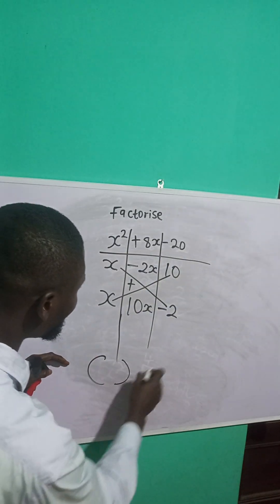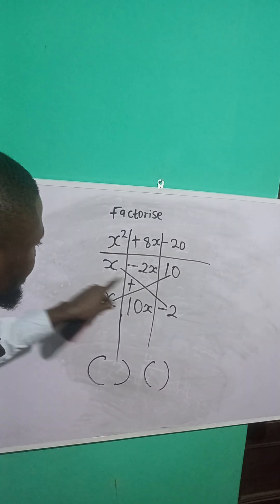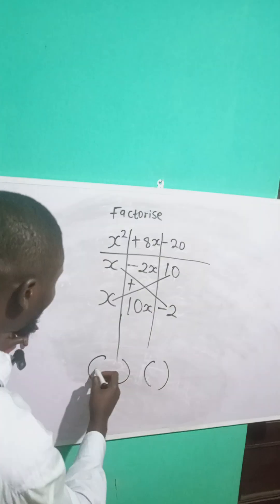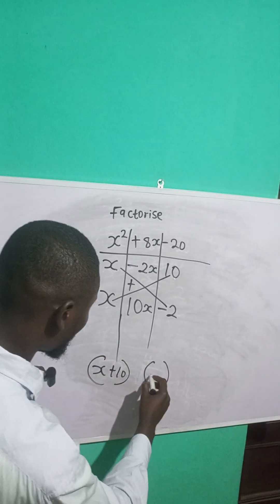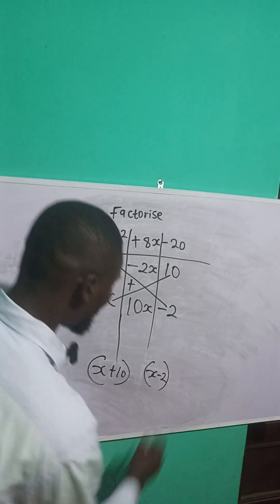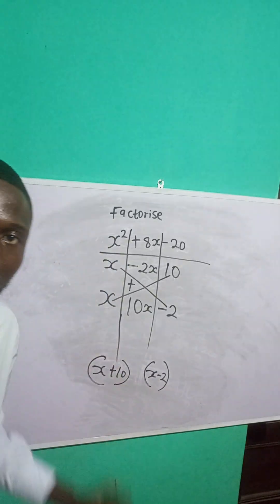So I'll just immediately open two brackets. I have x here and I have 10 here. So this is what? x plus 10. And I have x here. I have minus 2 here. So this is what? x minus 2. I've just factorized this.